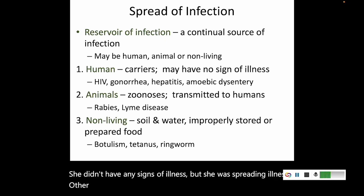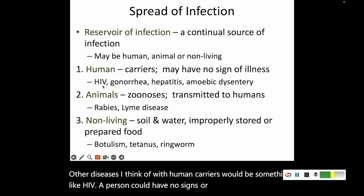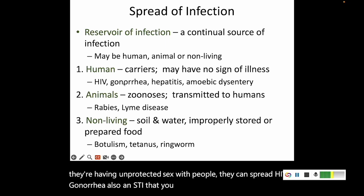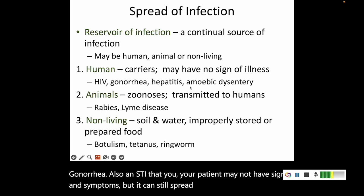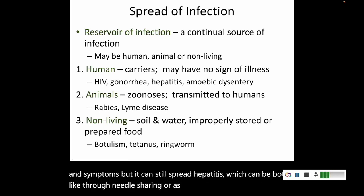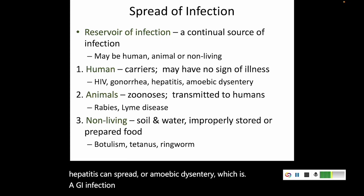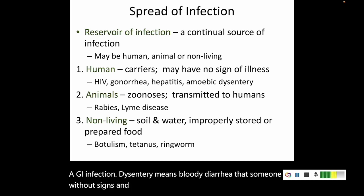Other diseases with human carriers include HIV — a person could have no signs or symptoms of HIV, but if they're having unprotected sex, they can spread it. Gonorrhea is also an STI where the patient may not have signs and symptoms but can still spread it. Hepatitis can spread through needle sharing, as an STI, or other ways. Amoebic dysentery — which means bloody diarrhea — is a GI infection where someone without signs and symptoms could secrete that amoeba into a water source and carry it to everyone.